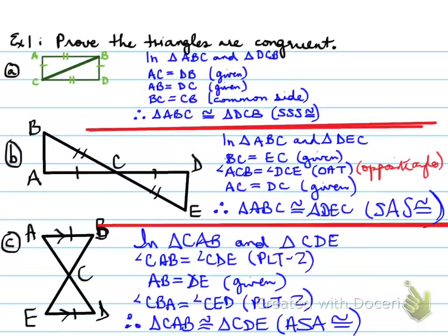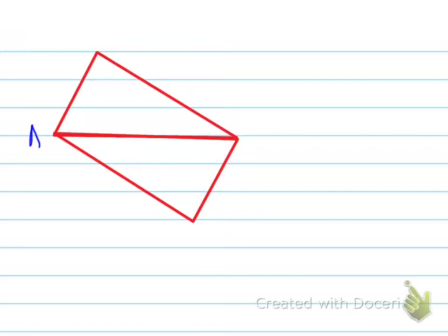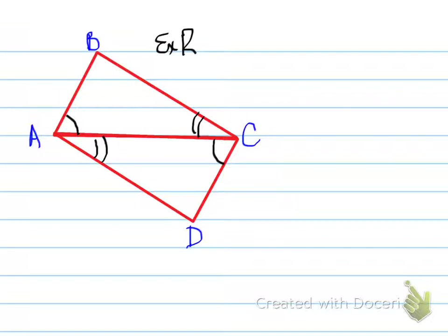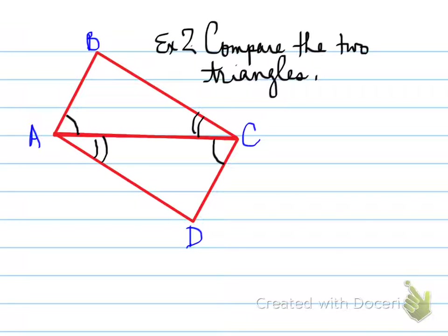So those are three different proofs using the three different conditions for congruency. The next part we're going to focus on is similar triangles — that's the congruent portion of the lesson. We don't have a lot of homework on the congruent part, but it's important that you see this. Let's look at another example: example number two — compare the two triangles and prove congruency. Stop the video and try to prove congruency for this question.